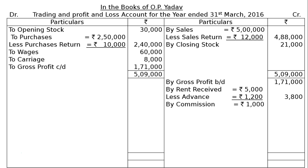Next, by commission Rs. 1,000. The fourth adjustment tells us: commission earned during the year but not received was Rs. 2,100. This is called accrued commission — it is receivable. So add accrued commission Rs. 2,100. In the final column, write down Rs. 3,100 as commission. This accrued commission is an asset and will be shown as current assets on the asset side of the balance sheet.